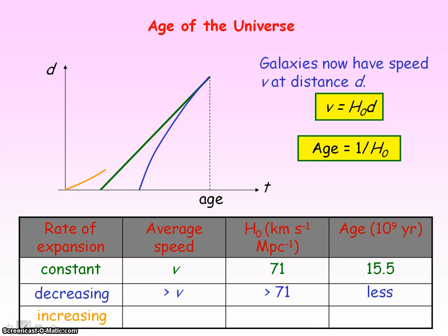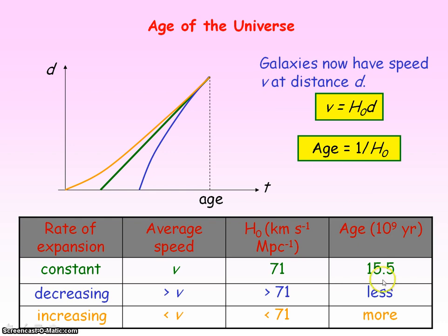If the rate of expansion is increasing — so the galaxies are accelerating to their current velocity V at distance D — then their average velocity will have been less than V. From Hubble's law, Hubble's constant for the same distance D would be less than the current value, so the age of the universe would be greater, making 15.5 billion years an underestimate.